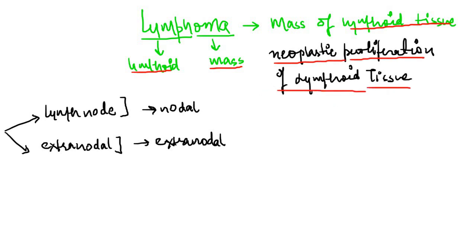The lymphoid tissue consists of B-lymphocytes and T-lymphocytes. The lymphoma, or the neoplastic proliferation of that lymphoid tissue, may arise within the lymph node — in that case, the lymphoma is called a nodal lymphoma. It can also arise at a place other than the lymph node, for example viscera, skin, abdominal wall, etc. In that case, it is called an extranodal lymphoma. Therefore, lymphomas are of two types: nodal lymphomas and extranodal lymphomas.